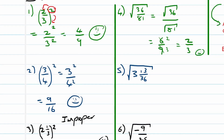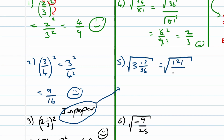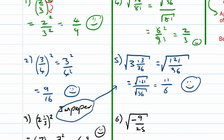Let's move to Example 5 — we've got a mixed number again. First step: write it as an improper fraction. 3 times 36 is 108, and 108 plus 13 is 121, giving us 121 over 36. Now applying the square root to numerator and denominator separately: the square root of 121 is 11, and the square root of 36 is 6. No common factors, so we are happy and done.